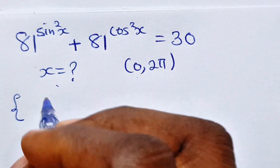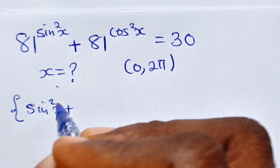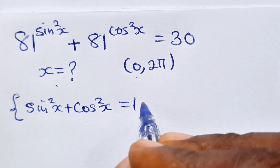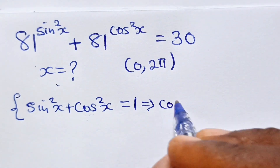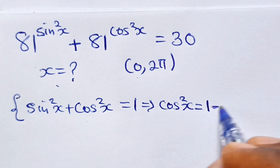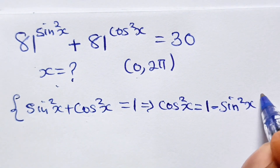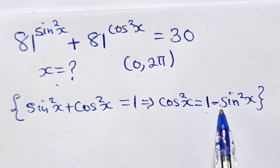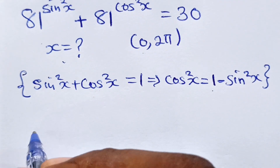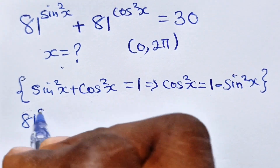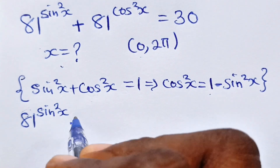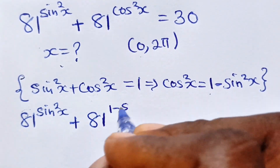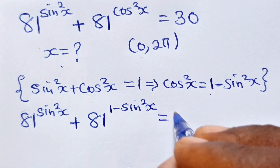Let's recall that sin²x + cos²x = 1, which implies that cos²x = 1 − sin²x. We are going to replace this cos²x with 1 − sin²x, so we now write: 81 raised to the power of sin²x plus 81 raised to the power of (1 − sin²x) is equal to 13.